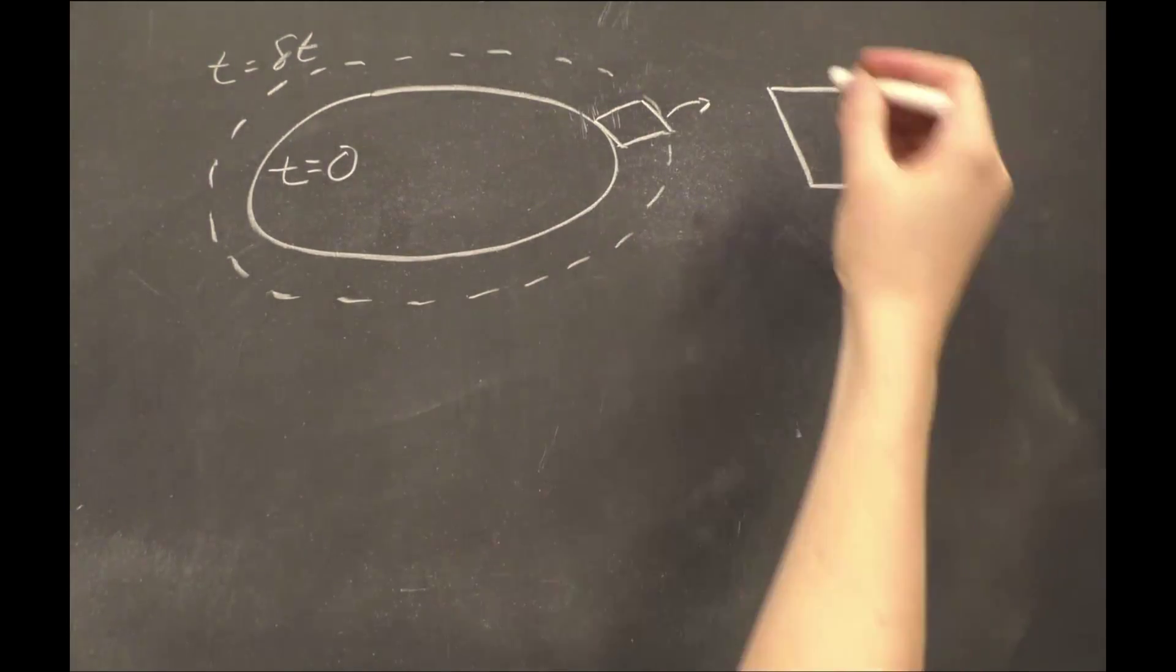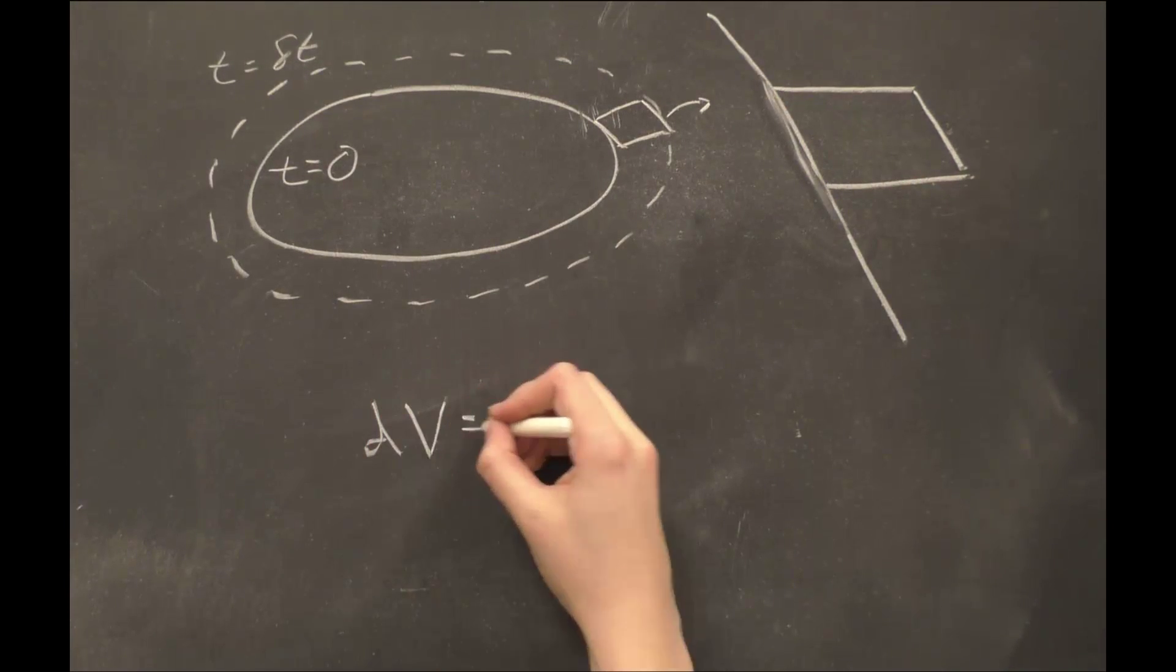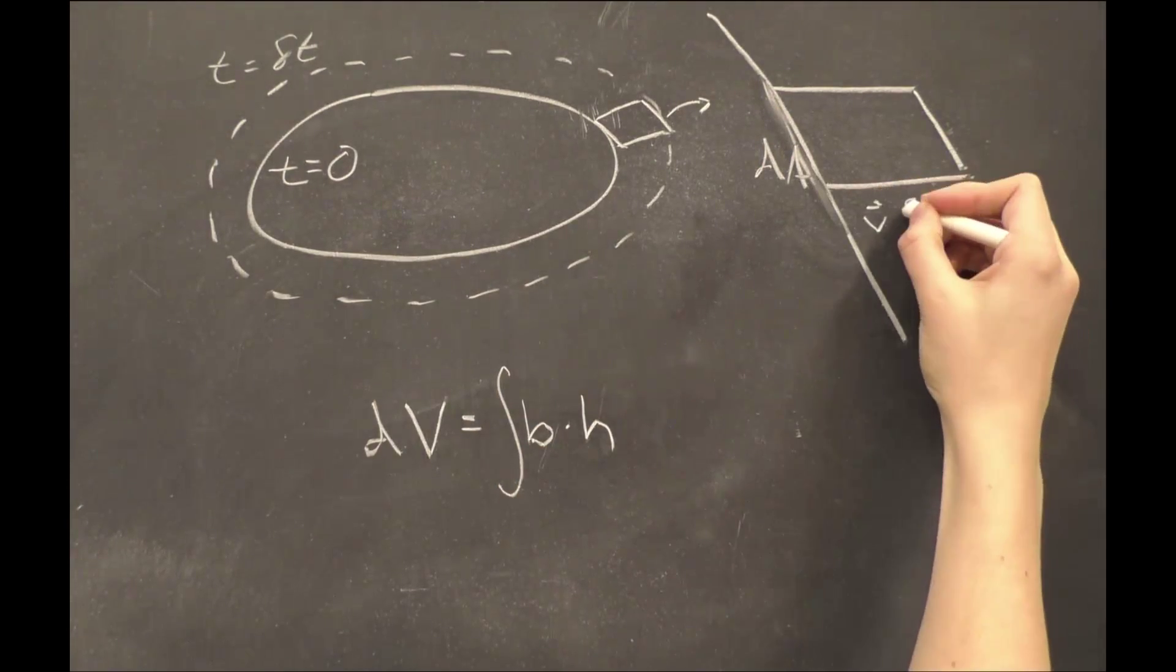Taking a small section, we see that the volume of this section is given by base times height. The change in volume of our surface is the summation of all of these small areas, so we say dV is the integral of base times height.